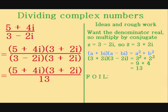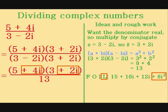So, now that we've dealt with the denominator, we move on to the numerator. We need to do FOIL again. First, 5 times 3 equals 15. Outside, 5 times 2i equals 10i. Inside, 4i times 3 equals 12i. Last, 4i times 2i equals 8i squared, equals minus 8.